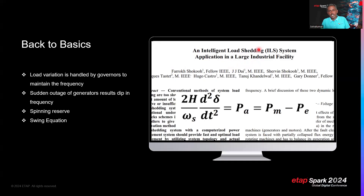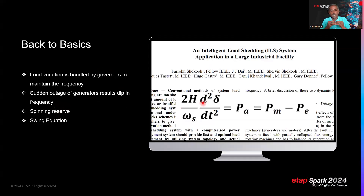A recommended reference is the IEEE paper 'An Intelligent Load Shedding System Application in a Large Industrial Facility,' published by ETAP around 2008, which discusses how to perform intelligent load shedding when an industrial facility disconnects from the grid. In our case, the focus is on how to optimally size the battery energy storage system to maintain spinning reserve and prevent load shedding. Load variation is handled by governors; sudden generator outage causes a frequency dip; spinning reserve must be maintained for both load and wind variation.